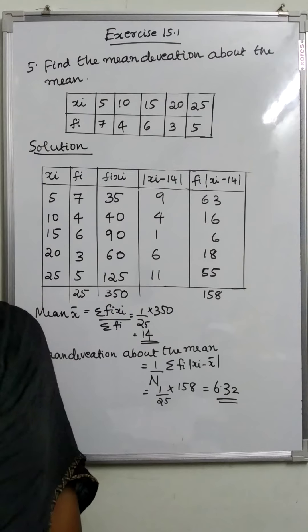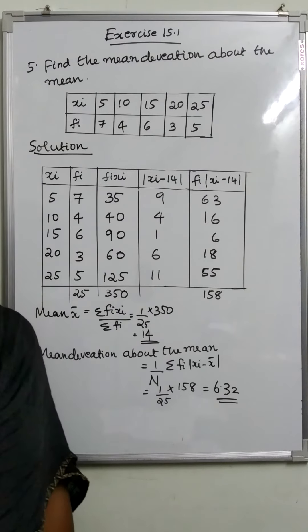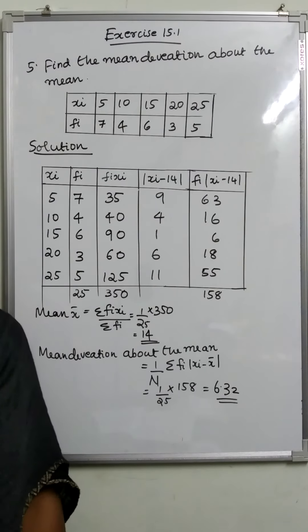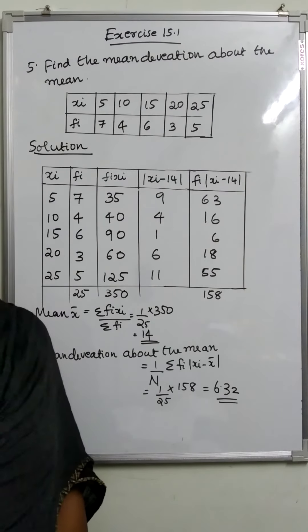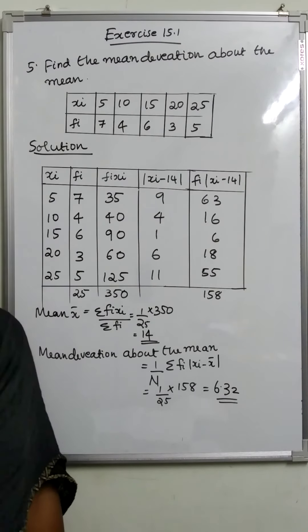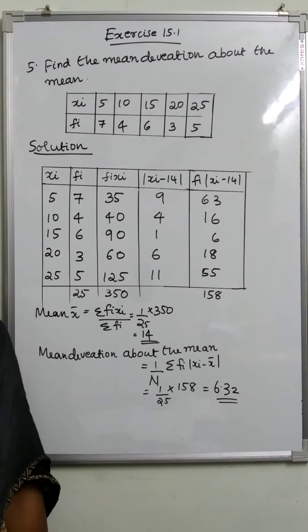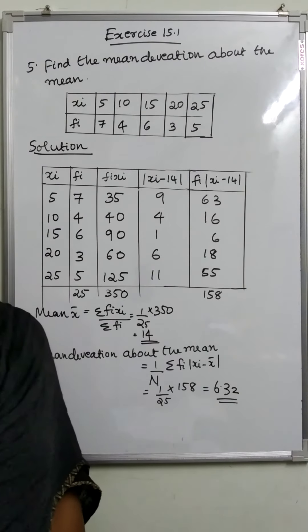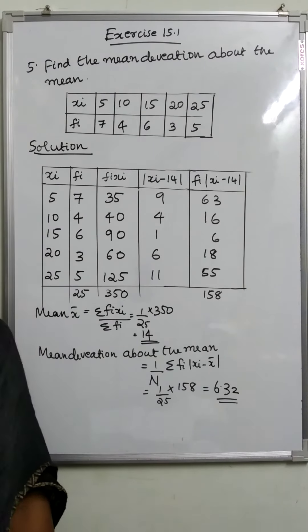Find the mean deviation about the mean for the data in exercise 5 and 6.